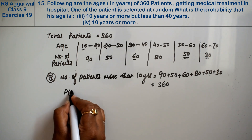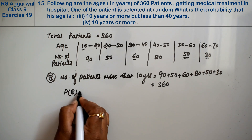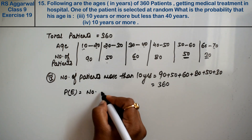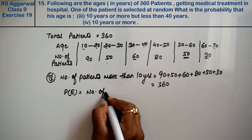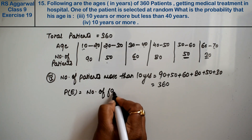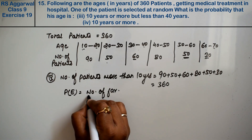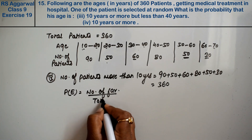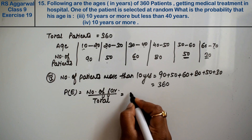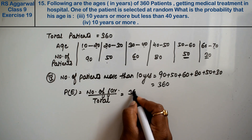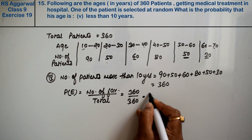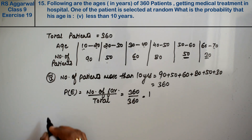Probability equals number of favourable divided by total, which is 360 upon 360. That means the answer is 1.